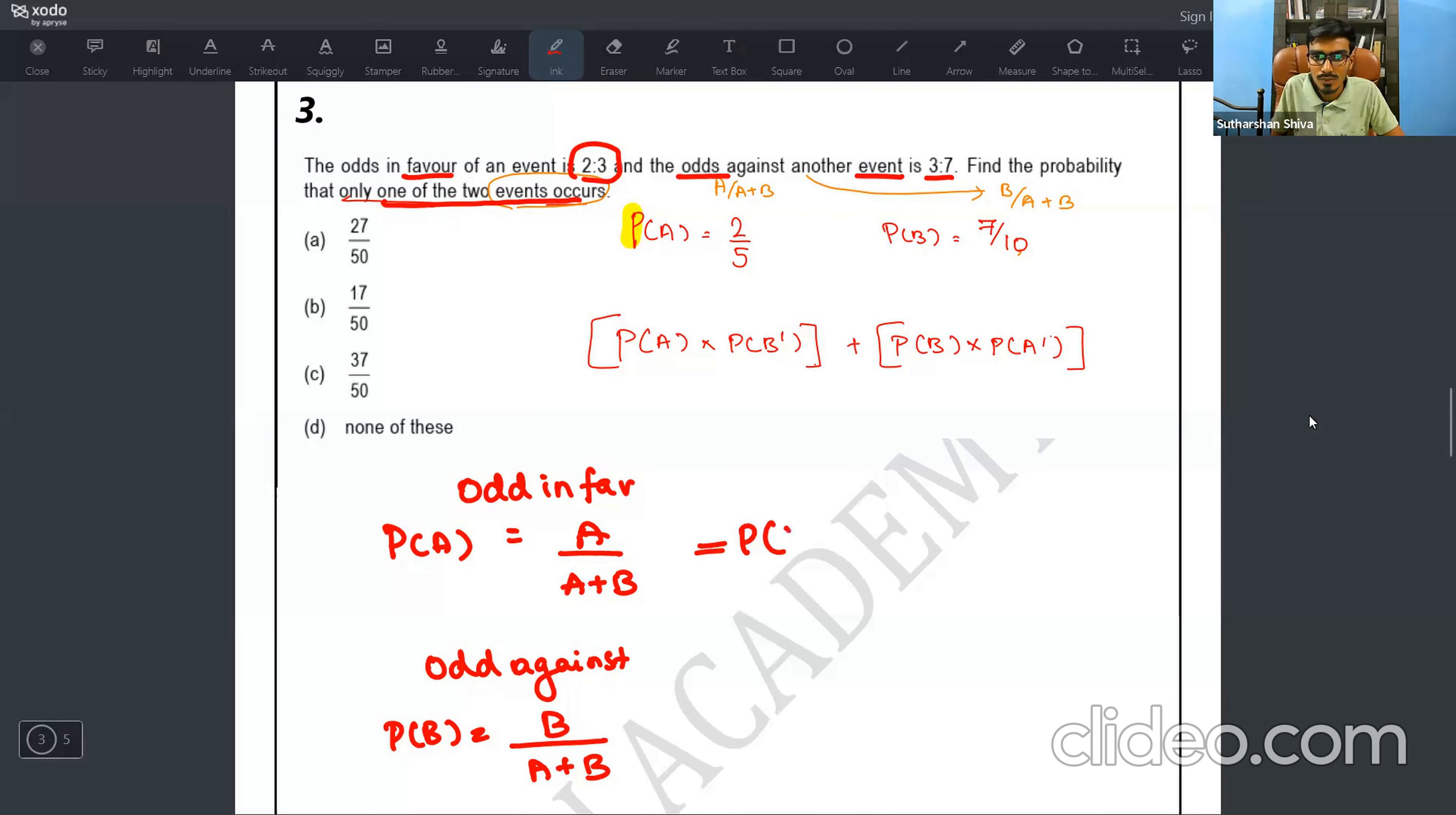So whenever they ask odds against, you will do the formula P of B is equal to B divided by A plus B. Same way P of A dash is equal to, you will first find out P of A. What is the P of A value? Two by five. What is P of B? This is A, this is B. So it is B divided by A plus B. So it is seven by 10. We will substitute in the formula.